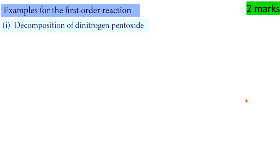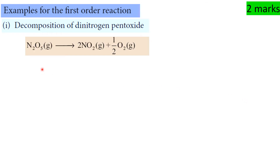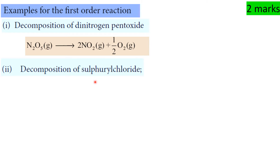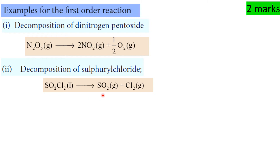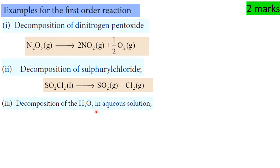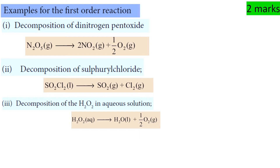Examples of first order reactions: decomposition of dinitrogen pentoxide — N2O5(g) gives 2NO2(g) plus O2; decomposition of sulphuryl chloride — SO2Cl2(l); decomposition of hydrogen peroxide in aqueous solution — H2O2 gives H2O plus O2.